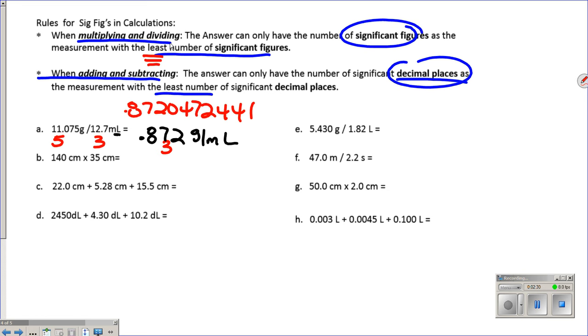If we look at our number 140, that measurement has two significant digits. 35 has two significant digits, which means our answer should have two significant digits. So the calculator gives you 4900 centimeters times centimeters gives us the unit centimeter squared. That's a unit of area. So without a decimal place, this number has two significant digits. If we add that decimal place, it now has four. We need it to have two significant digits, so we will not include that decimal place.